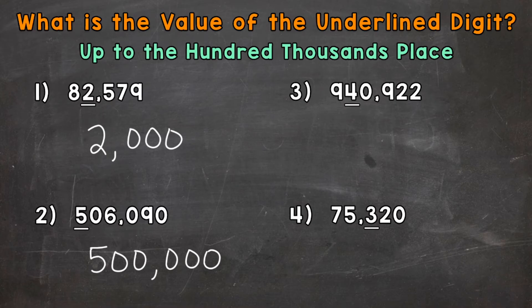On to number three, where we have 940,922. So what's the value of the underlined four? That four is in the ten thousands place. So it represents four groups of 10,000. So the value is 40,000.